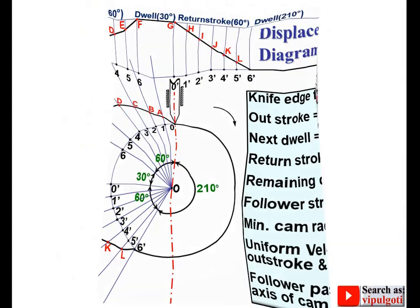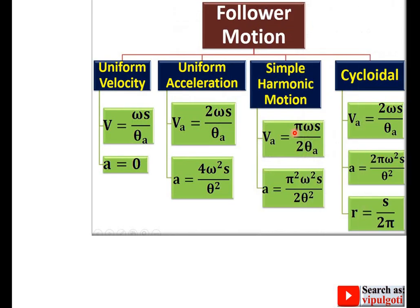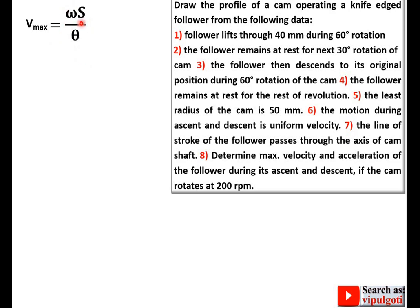Now for the calculation part: determine maximum velocity and maximum acceleration of the follower. Since uniform velocity is given, use the formula: v = ω·s / θ. First, find the angular velocity: ω = 2πN / 60, where N is the rpm given as 200. This gives ω = 20.94 radians per second.